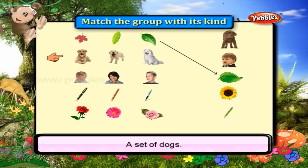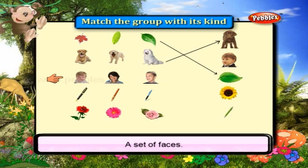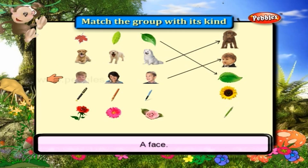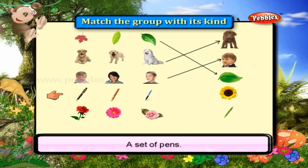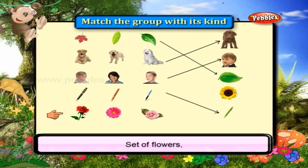A set of dogs — dog. A set of faces — a face. A set of pens — a pen. A set of flowers — flower.